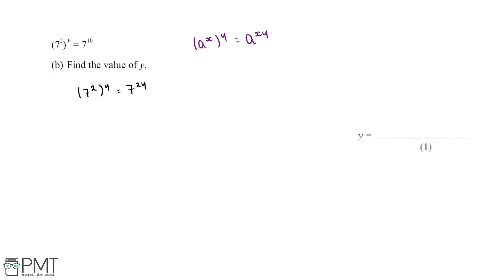So if 7 squared to the power of y is equal to 7 to the power of 2y, then 7 to the power of 10 is equal to 7 to the power of 2y. We can simplify this down to 10 is equal to 2y, which tells us that y is equal to 5.